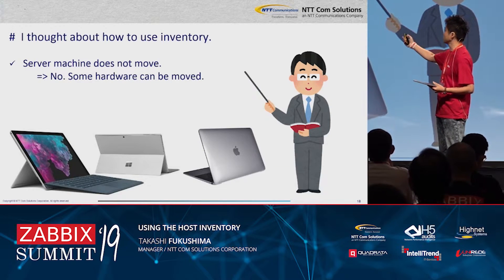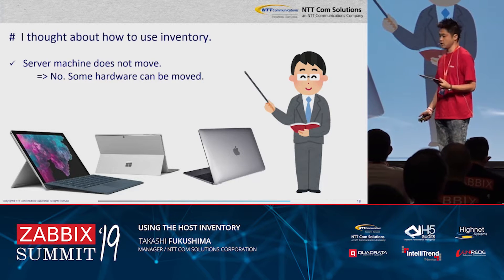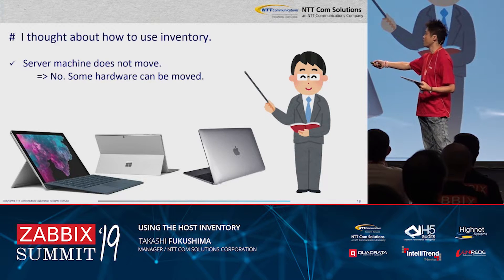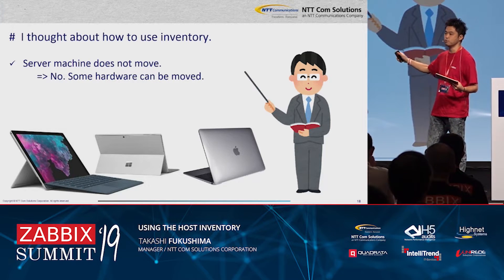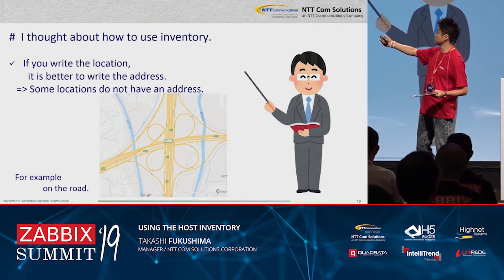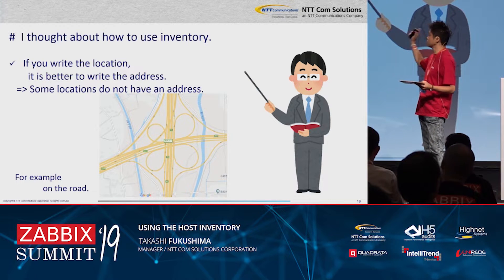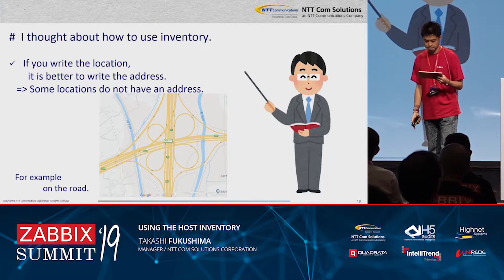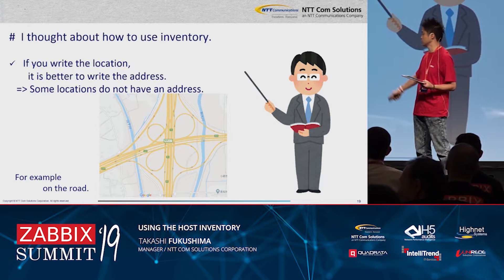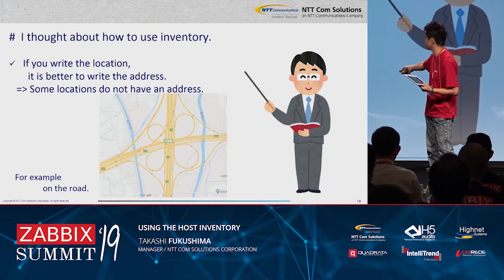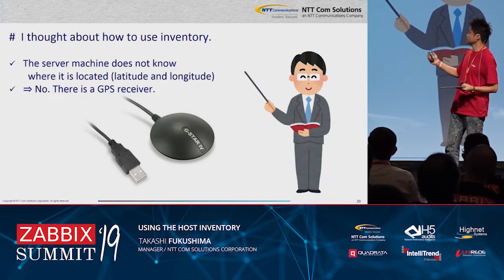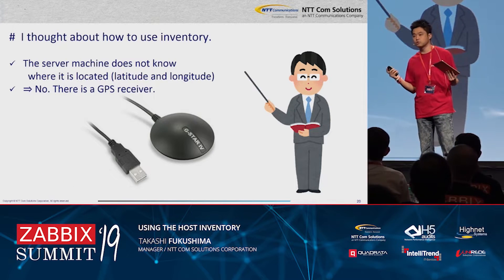I thought about how to use inventory. The server machine does not move — but some hardware can be moved. If you log the location, it is better to write the address. But some locations do not have an address — for example, on the road. Also, the server machine does not know where it is located. But there is a GPS receiver.